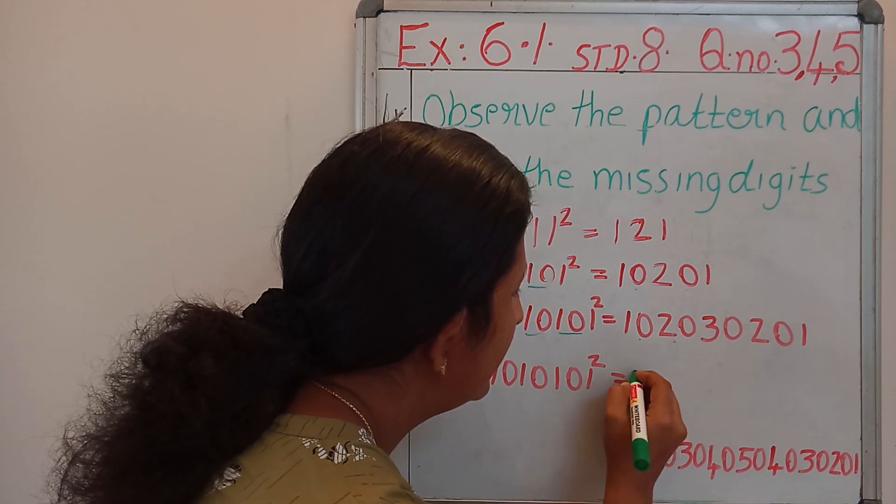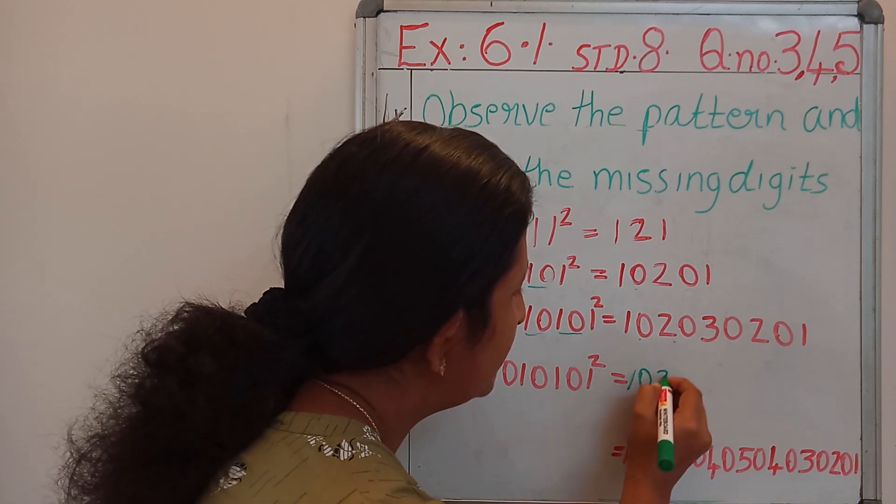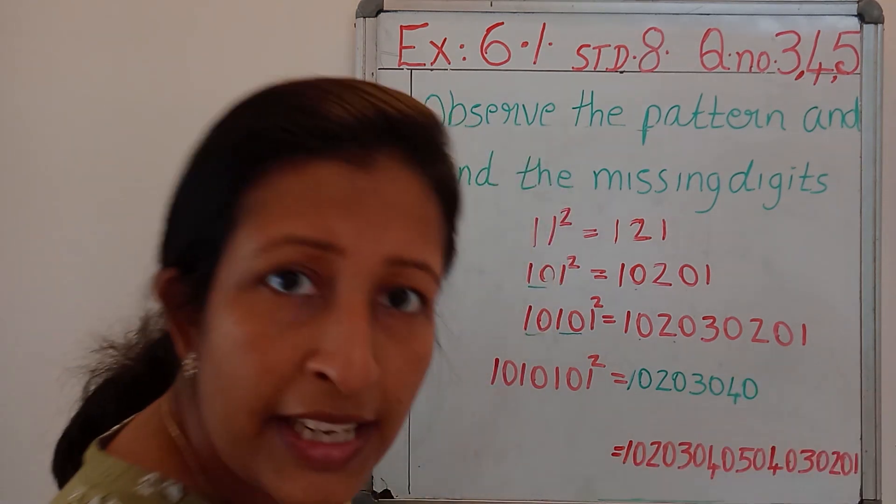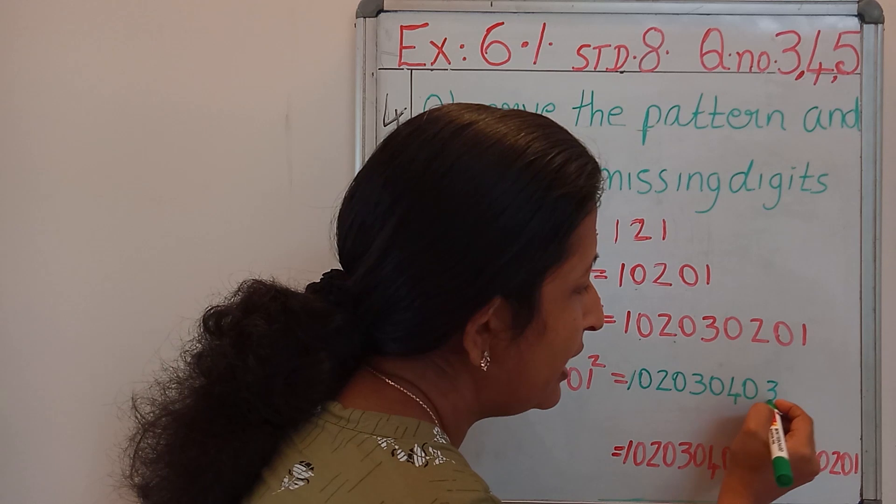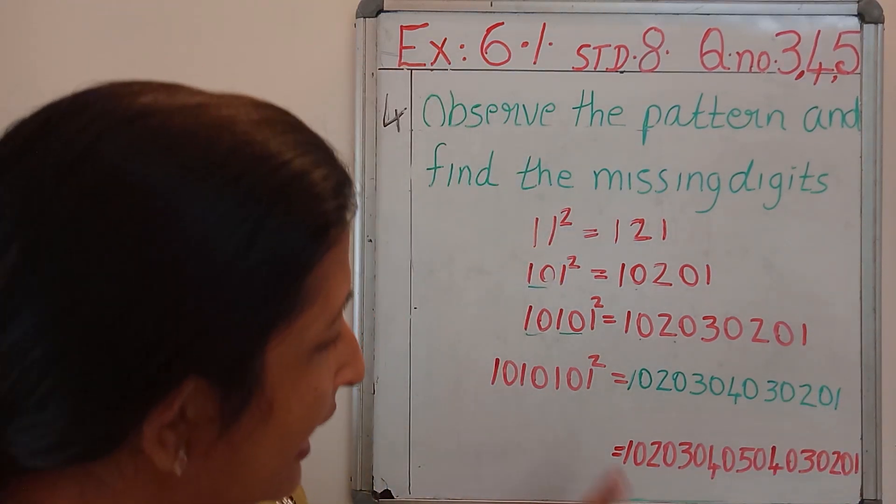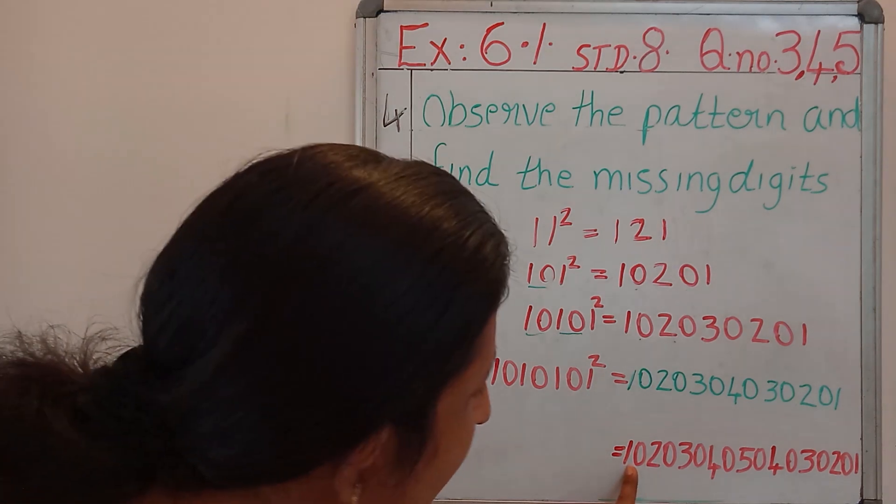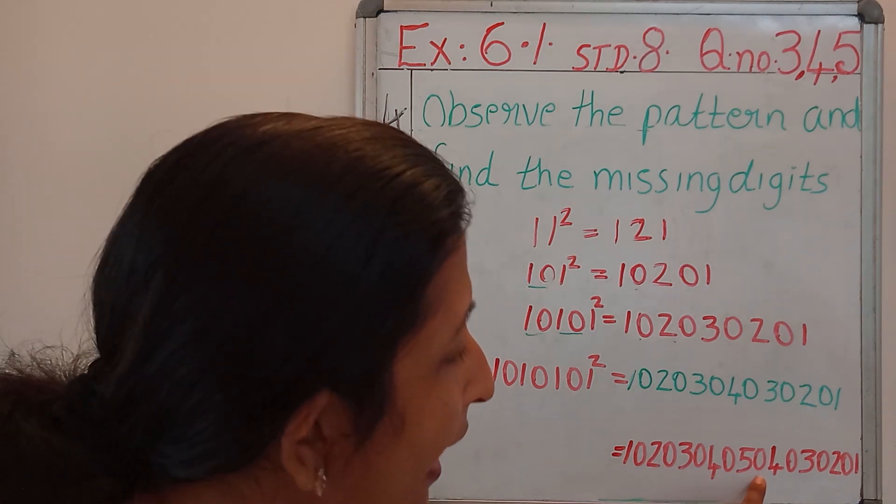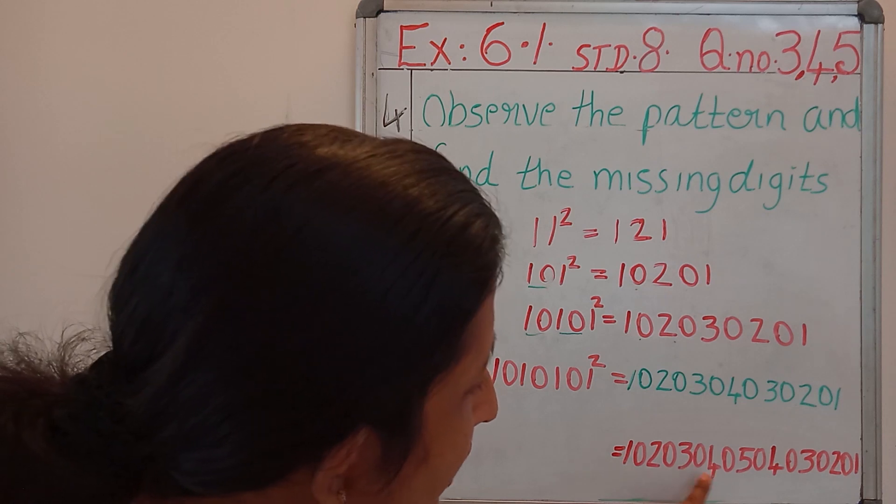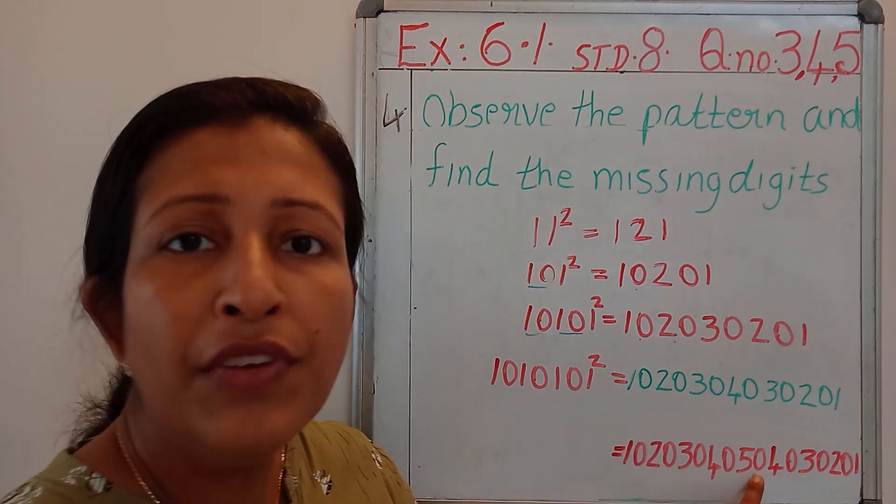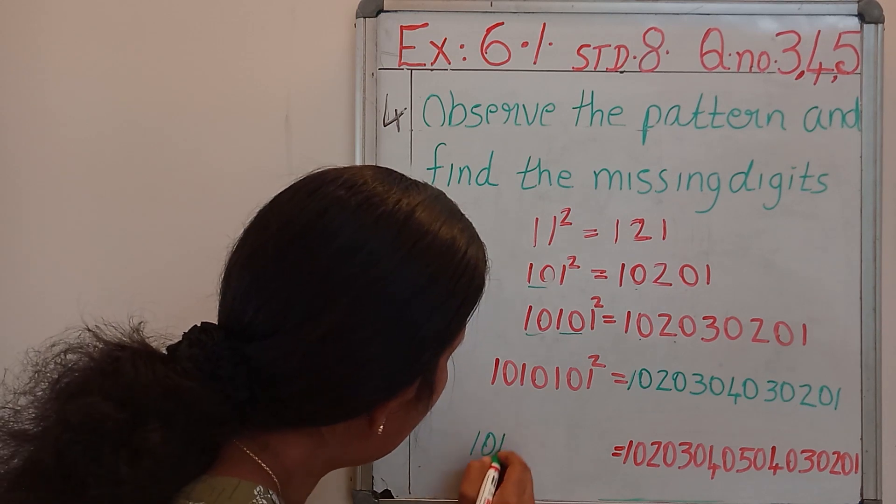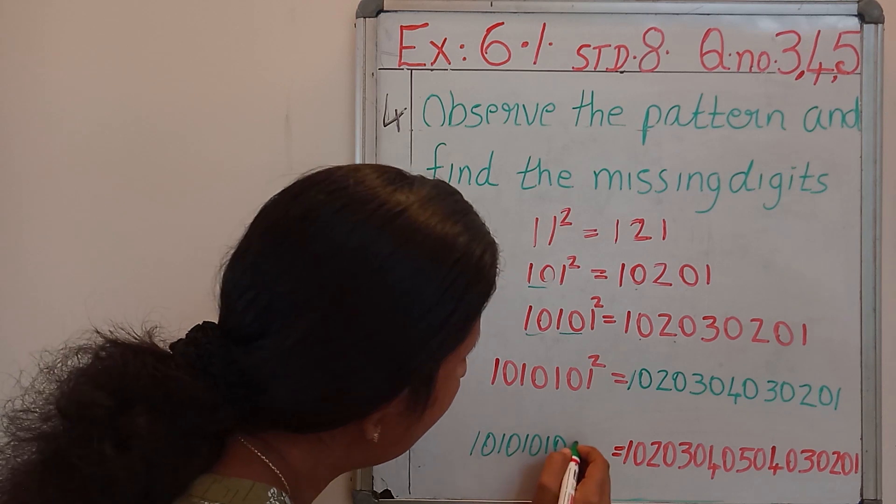Here 10, 10, 10—three tens—so we should write up to 40. So 10, 20, 30, 40, then in reverse order: don't write 40 again, 30, 20 and 1. Here they have given the right side: 10, 20, 30, 40 and 50. After that come in the reverse order. If there are up to 50 we should have five tens, that is 10, 10, 10, 10, 10 and 1. So this is the answer.